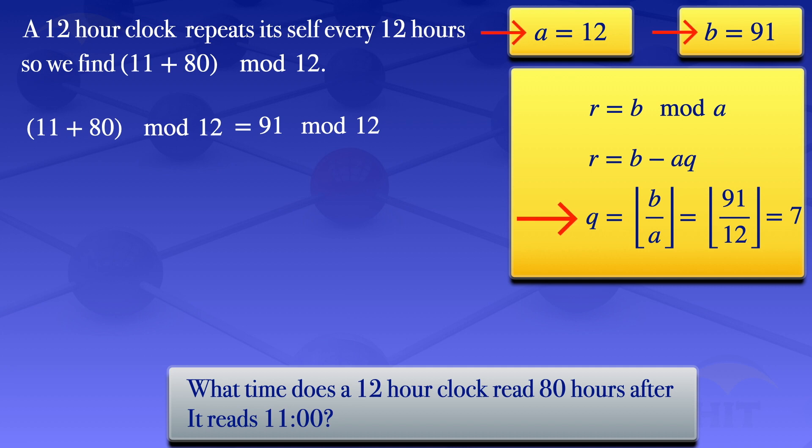Substituting them into the formula for the remainder, we have that the remainder is 91 minus 12 times 7. 91 minus 12 times 7 gives us 7. So that's the remainder.